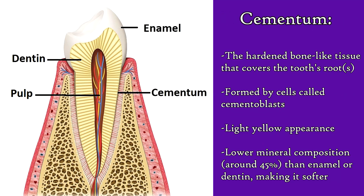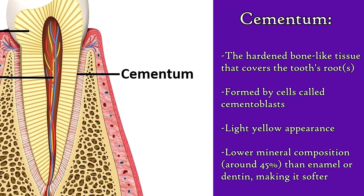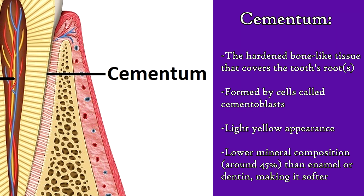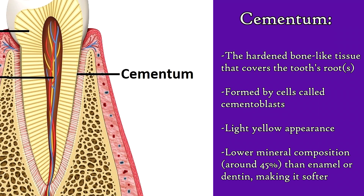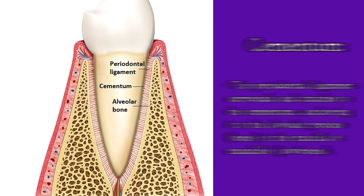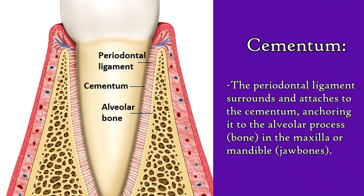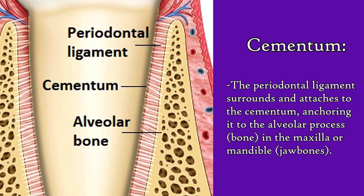Another type of tissue found in the tooth is cementum, which is the hardened bone-like tissue that covers the tooth's root. It's formed by cells called cementoblasts, and cementum has a light yellow appearance, as you can see. It consists of a lower mineral concentration than both enamel and dentin, making it softer in comparison to those tissues. The periodontal ligament surrounds and attaches to the cementum of the tooth and anchors it to its socket in the alveolar process of the jaw bones.